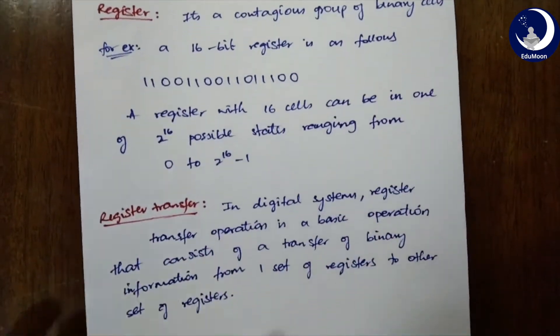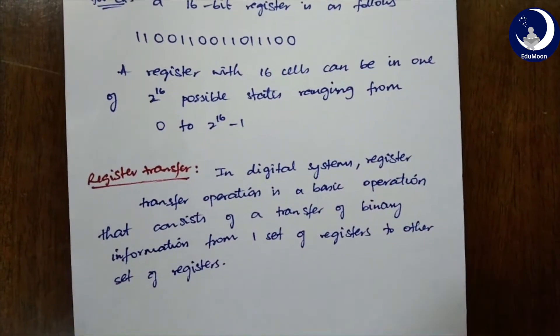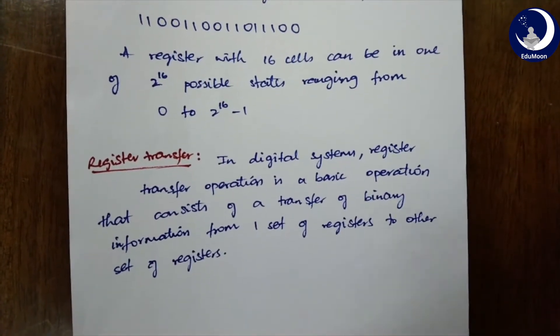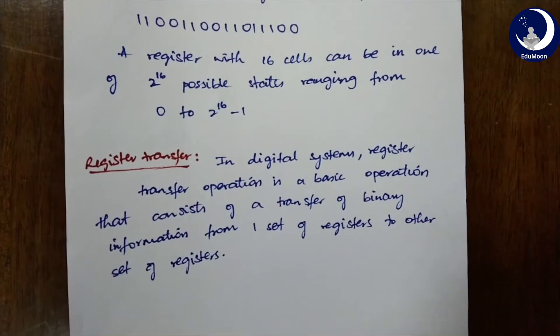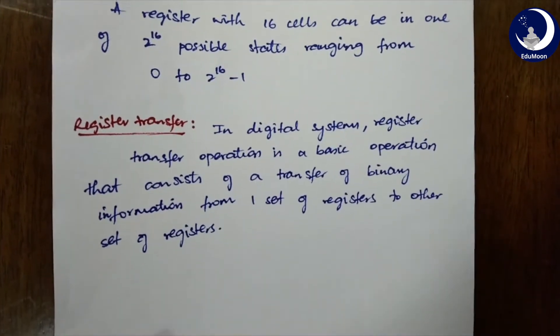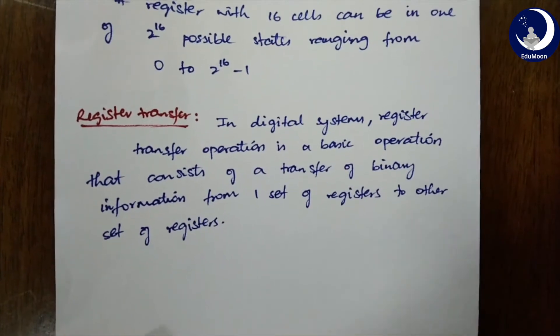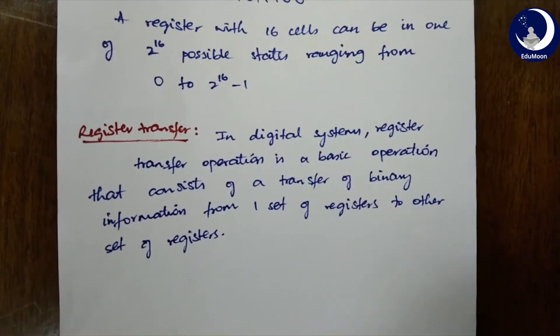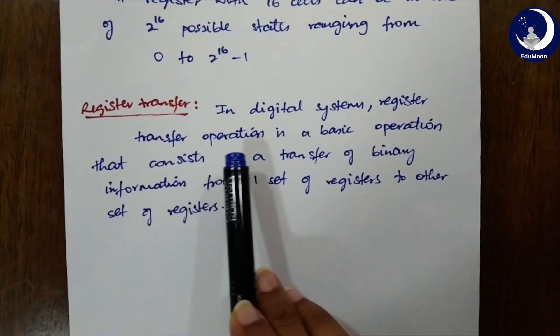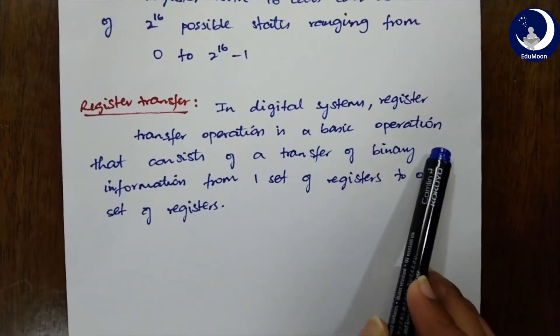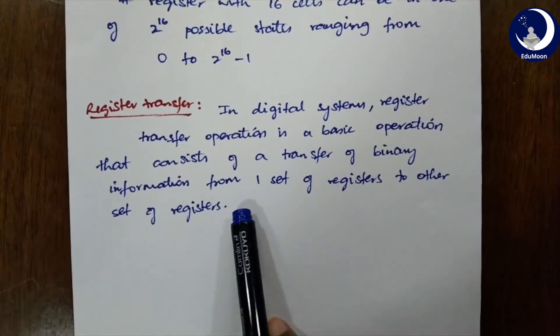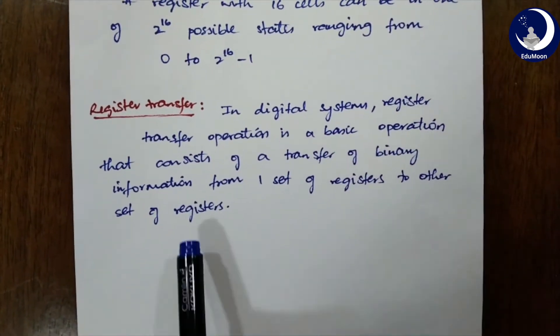Now, let's get into register transfer. How does a computer actually work? We humans can understand alphabets, numbers, alphanumeric constants like dollar symbol, asterisk symbol or any other kind of symbols. But can a computer understand those values? No, right? It can only understand zeros and ones. In digital systems, register transfer operation is a basic operation that consists of a transfer of binary information from one set of registers to the other set of registers.